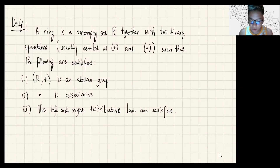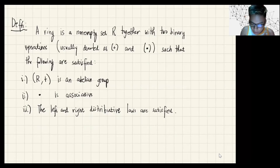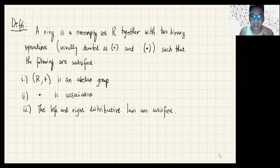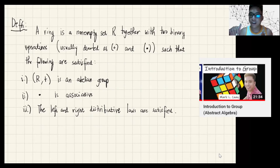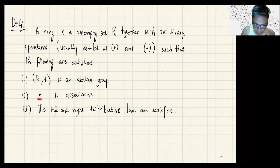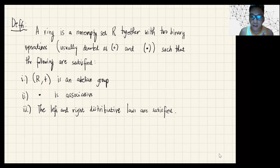So we'll start now. What do we mean by a ring? A ring is a non-empty set R together with two binary operations, usually denoted by specific symbols, such that the following conditions are satisfied. First, R with addition is an abelian group — if you want to know what an abelian group is, you might want to check the thumbnail. Second, the multiplication operation is associative.